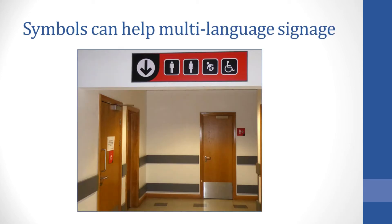Symbols can also be very helpful when it comes to multiple languages on signage. If you're trying to put a sign into two languages, it's very challenging — you can have a lot of text and it's difficult to distinguish between them. If you use only symbols, this overcomes the problem. There's no need to put in two languages — you're using the universal language of symbols, in this case for toilets, disabled toilets, and nappy changing.